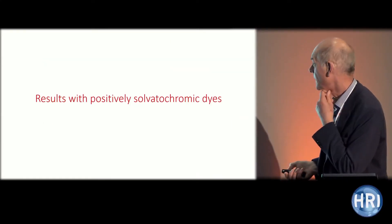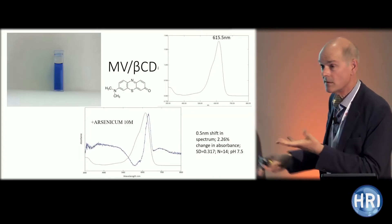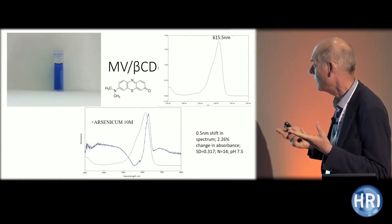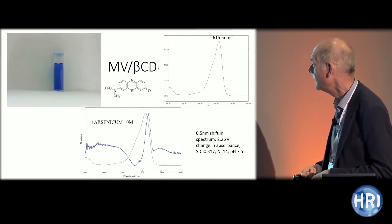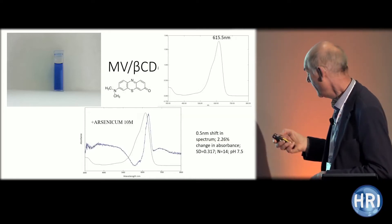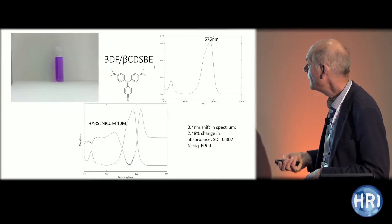These are results with positively solvatochromic dyes. The first is methylene violet, which absorbs around 615 nanometres. When you add arsenicum 10M — the potency used, chosen because high potencies above 12C avoid mixed-material homeopathic effects — you get a red shift of about 0.5 nanometres. The second dye, BDF, the subject of a paper a couple of years ago, also shows a red shift of about 0.4 nanometres in the presence of arsenicum 10M.